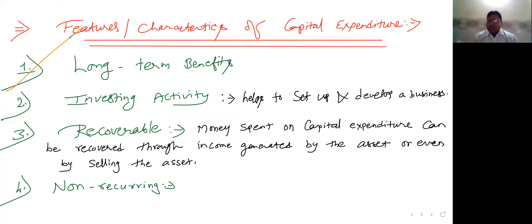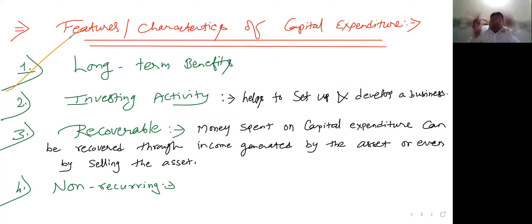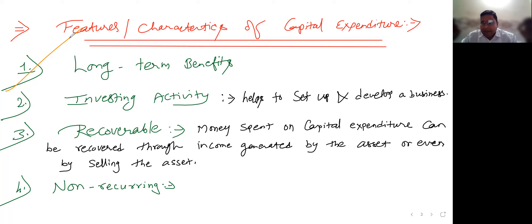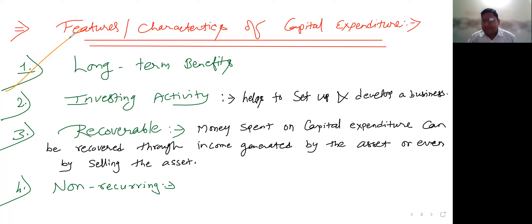So you can say that the biggest feature of capital expenditure is that it gives long-term benefits. It gives long-term benefits. So what is the first feature? Long-term benefits. The first feature is long-term benefits.